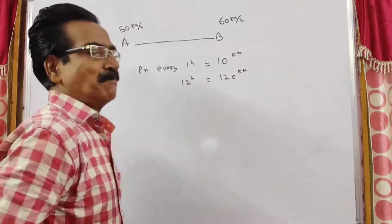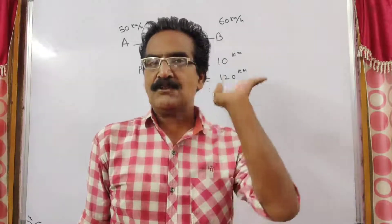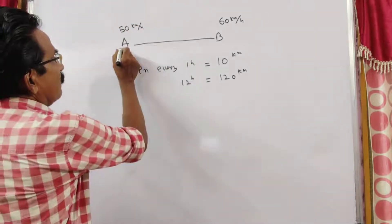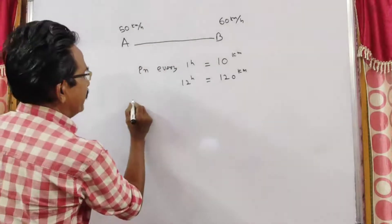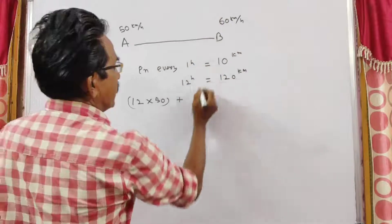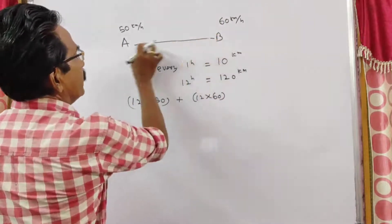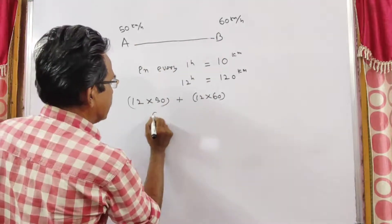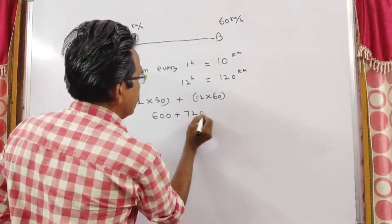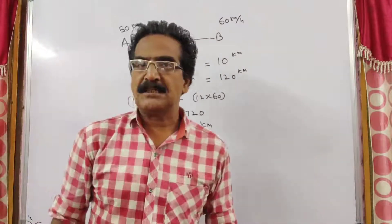The trains must have met after 12 hours. In 12 hours, train A travels 12 × 50 = 600 km, and train B travels 12 × 60 = 720 km. Total distance between A and B is 600 + 720 = 1320 km.